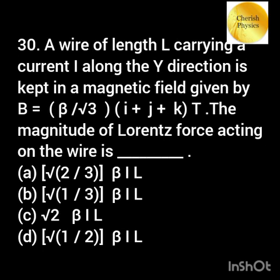A wire of length L carries a current I along the y-direction and is kept in a magnetic field as given. The magnitude of Lorentz force acting on the wire is?